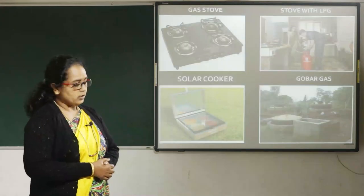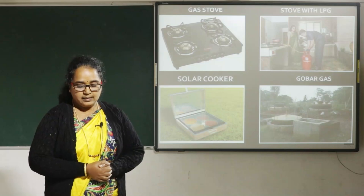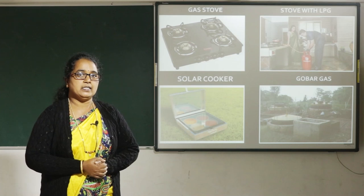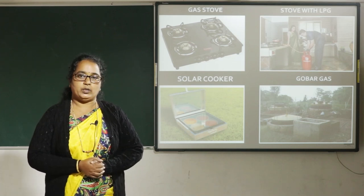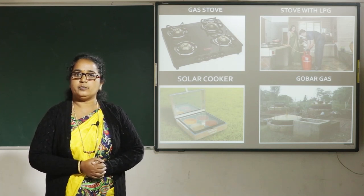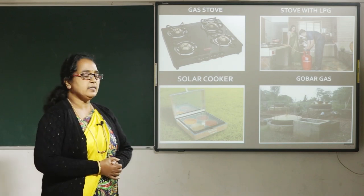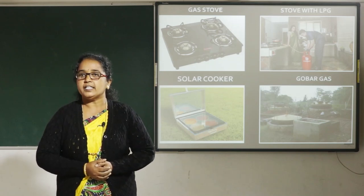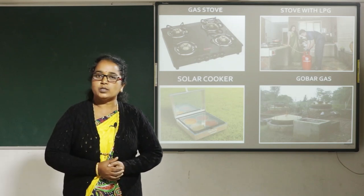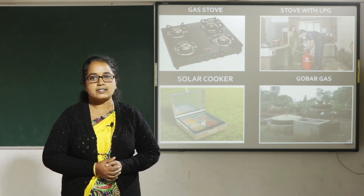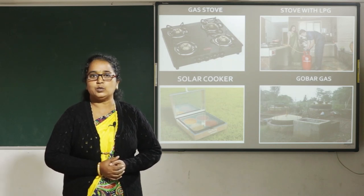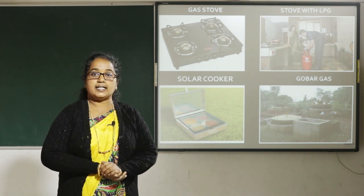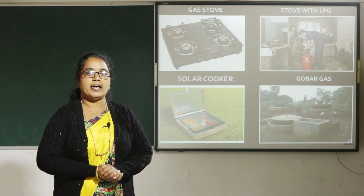Gas stove. Here you can see the picture of a gas stove and LPG cylinder. The fuel used in the cylinder is LPG, which stands for Liquid Petroleum Gas. Solar cooker uses the heat of the sun for heating food items; it depends on weather conditions and takes a lot of time. Gobar gas, also called biogas, is a clean, unpolluted, and cheap source of energy.